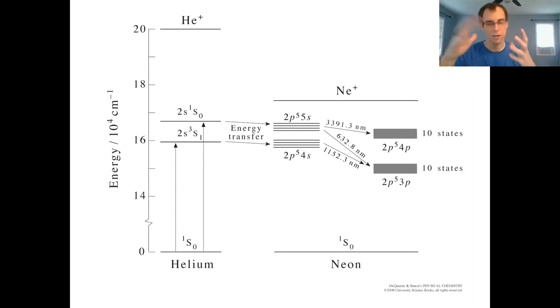You generate an electrical discharge inside of a mixture of helium and neon gas, and that generates the lasing medium. And then you have your mirrors and output coupler.